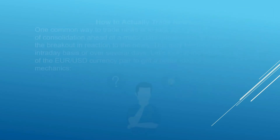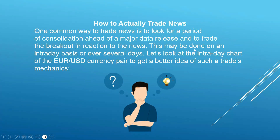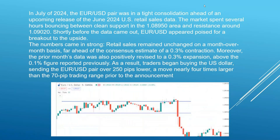How do we actually trade the news? The simple and common way is to wait before the news for a consolidation zone — a range area where price cannot break the high or low of the support and resistance. You look for this range, and then a break above or below is your key signal. Here is a recorded example for the EUR/USD, and I'll also have a live example from today, since we had important news for both the euro and the dollar.